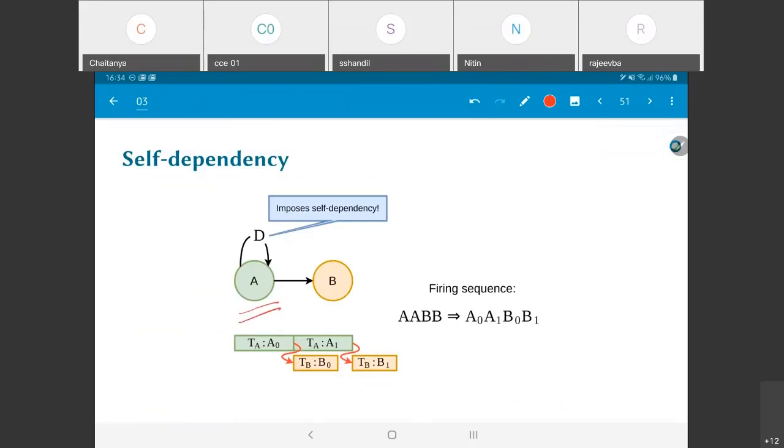On the other hand, this self-dependency, this is sometimes called a self-loop, self-dependency or a self-loop over here in terms of the graph. In this case, now what it is saying is there is a dependency, only after A0 has completed can A1 happen. This dependency, in other words, exists now.